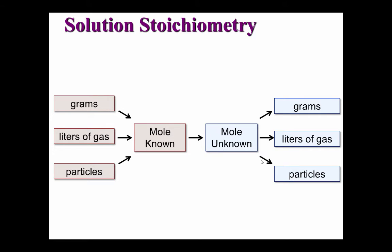Though we've solved many different types of stoichiometry problems, the common theme is to convert from one chemical — our known — to another, the unknown. This is done using the coefficients in a balanced equation as a mole ratio.